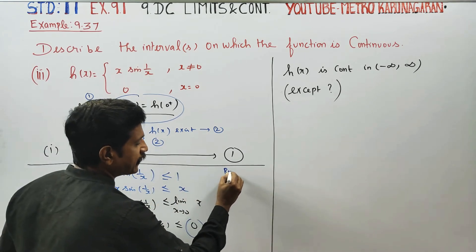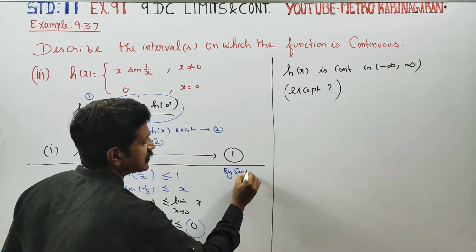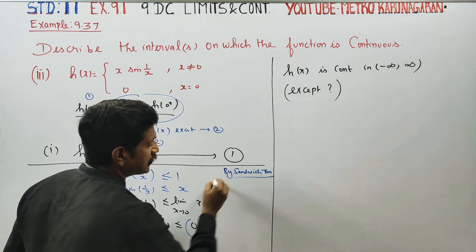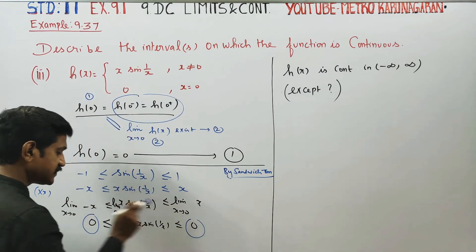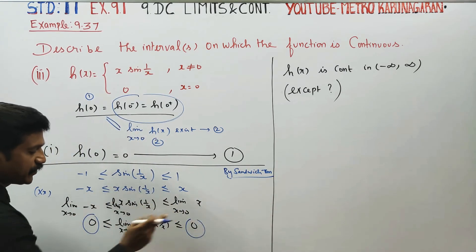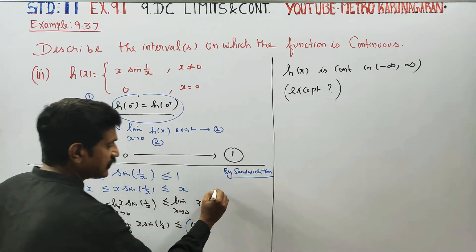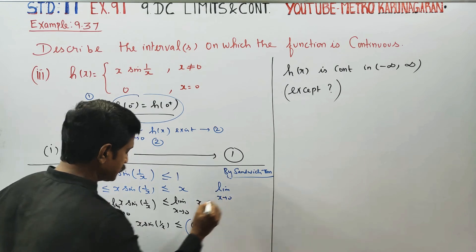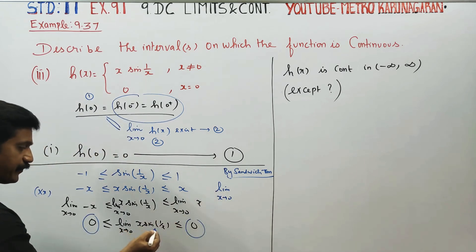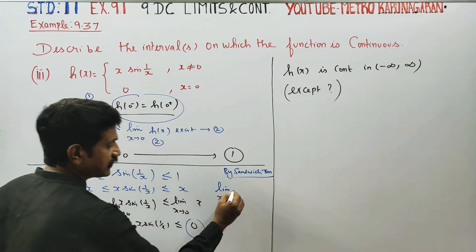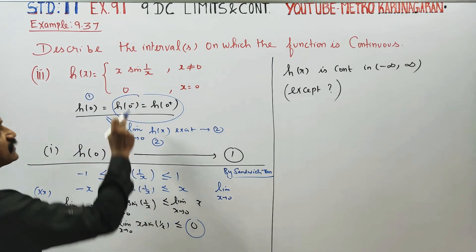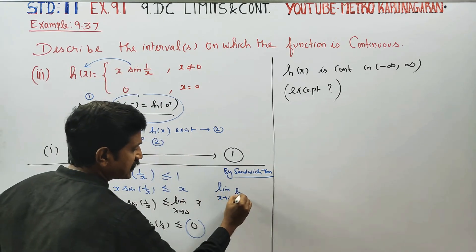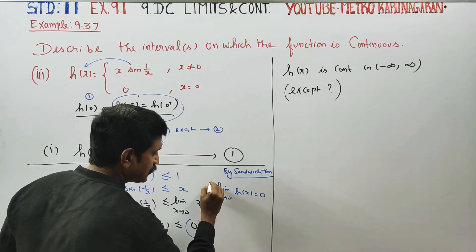By the sandwich theorem, since both sides equal 0, the limit lies between the same value on both sides. Therefore, by the sandwich theorem, the limit as x tends to 0 of x·sin(1/x) = h(x) is equal to 0.